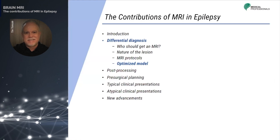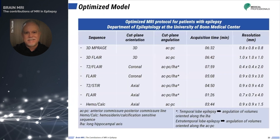The last slide on differential diagnosis presents an optimized model of MR protocols useful when epilepsy is suspected. The experience at the Department of Epilepsy at the University of Bonn Medical Center can be used as a model for establishing a community-based epilepsy MR protocol. This six-sequence protocol — including three-dimensional T1, hemorrhage/calcification-sensitive sequences, two-dimensional FLAIR, and T2 short tau inversion recovery (STIR) imaging — helped detect 99.4 percent of all epileptogenic lesions visualized by MRI during pre-surgical workup.